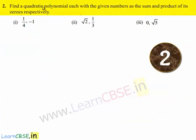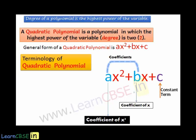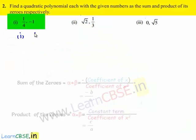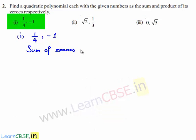Coming to the second problem: find a quadratic polynomial each with the given numbers as the product and sum of its zeros respectively. The first one given to us has sum of zeros equal to 1/4 and product of zeros equal to -1.